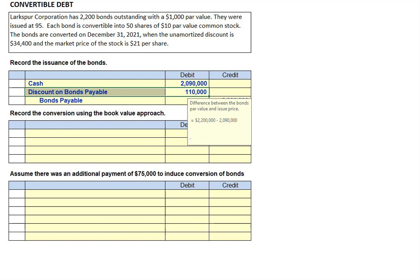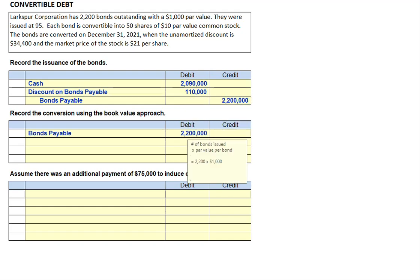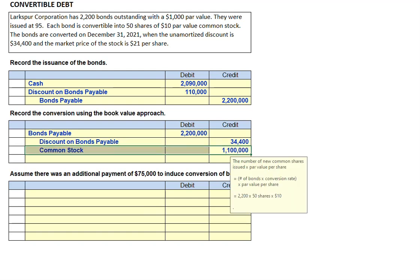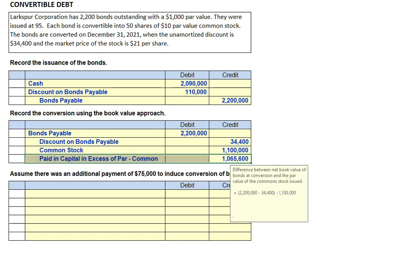Now, we're told the bonds are converted when the unamortized discount is $34,400. We need to remove the bonds payable from our books as well as any remaining unamortized discount. We debit bonds payable for $2,200,000 and credit the discount on bonds payable for $34,400 — the remaining unamortized discount. We credit common stock for the number of shares issued: 2,200 bonds convertible into 50 shares per bond at a $10 par value, giving us $1,100,000. The difference is then plugged to additional paid-in capital.